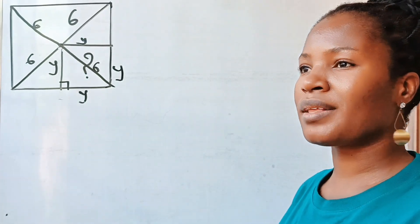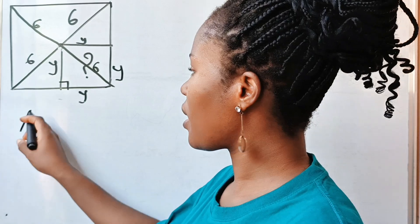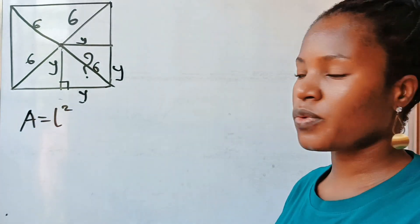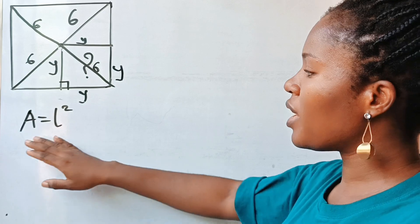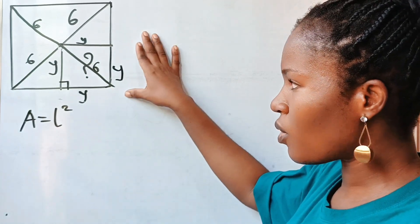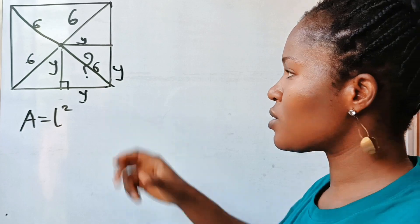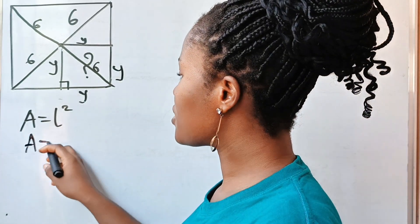All right, back to the drawing. Before we go over to solve whatever we want to solve here, let us remember that the area of a square is equal to length squared. The area of a square is length squared. Now if we relate this to what we have on the board, it simply means that the area of the square we are asked to find is going to be equal to y squared.